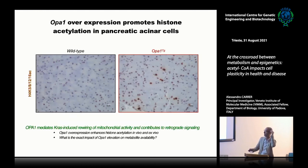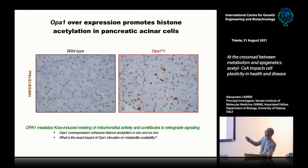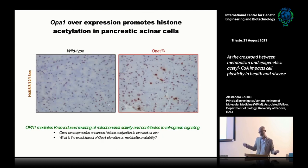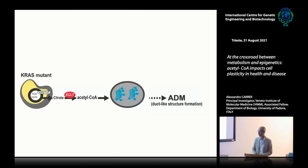We saw this both in cells isolated ex vivo and in vivo — pancreatic tissue slides stained for tetra-acetyl H4 showed that OPA1 upregulation leads to a widespread increase in histone acetylation in the pancreatic parenchyma. We still have many questions: exactly how OPA1 wires the epigenome and whether this is ultimately dependent on acetyl-CoA abundance. We are also working to understand whether OPA1 genetics impacts tumor formation in vivo, and hope to show data in the near future.